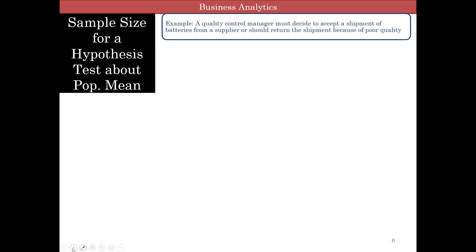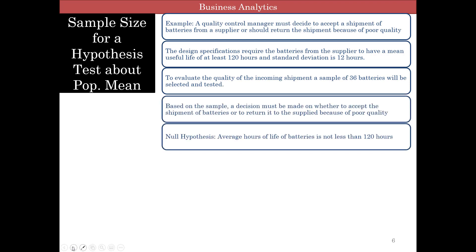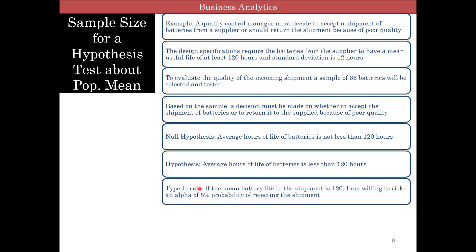In this problem, the hypothesis and null hypothesis have been discussed. Type 1 error: if the mean battery life in the shipment is 120 hours, the manager is willing to risk a 5% alpha probability of rejecting the shipment.